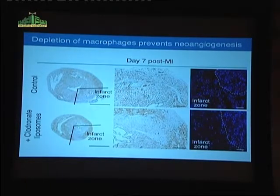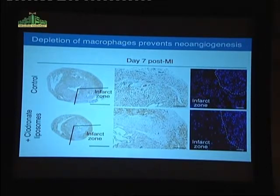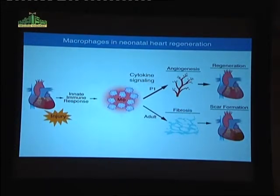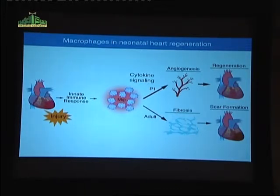Macrophage infiltration during the inflammatory response is clearly critical for neonatal regeneration. In the infarct zone you can see all these new blood vessels stained for PECAM. If we eliminate the macrophage population, there is no new blood vessel formation — instead there's simply a fibrotic scar devoid of new blood vessels. We now believe that the injury response to the neonatal heart leads to an innate immune response in which macrophages release cytokines that stimulate neoangiogenesis and probably survival of muscle cells contributing to regeneration.